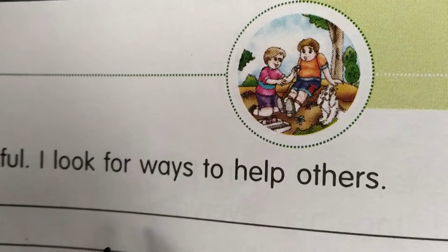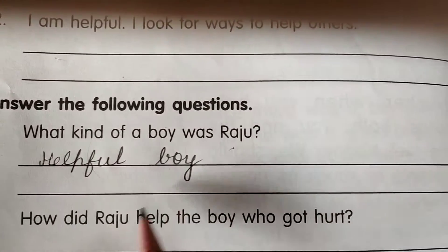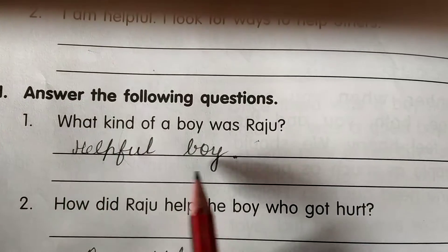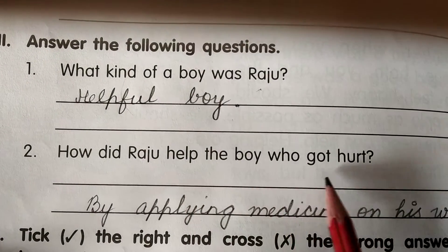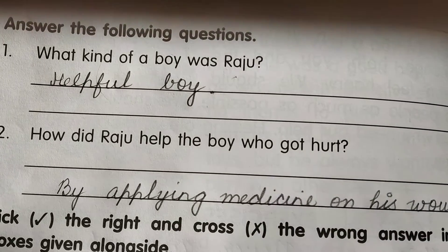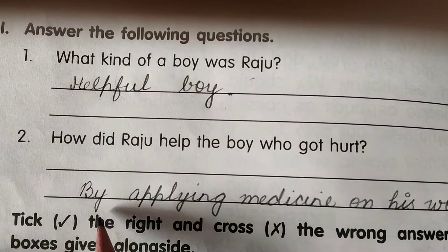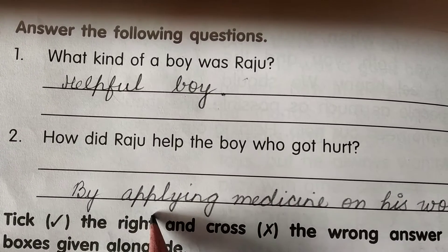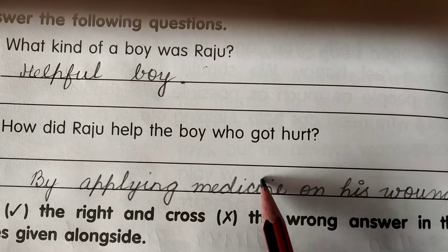Then answer the following questions. Number one: what kind of a boy was Raju? Raju was a helpful boy, so our answer is: helpful boy. Number two: how did Raju help the boy who got hurt? By applying medicine on his wound. The spelling of applying is A-P-P-L-Y-I-N-G, and medicine is M-E-D-I-C-I-N-E. Answer: by applying medicine on his wound.